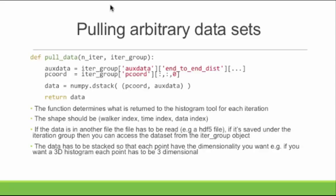The walker index is an arbitrary number — it's a trajectory ID. In the file system, there's iteration 1 and then internal IDs for every walker. The time index is the time points within each trajectory — say, five time points per trajectory. You can return one, five, or 100 time points. It's up to you.